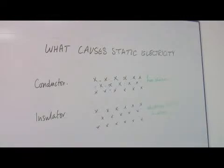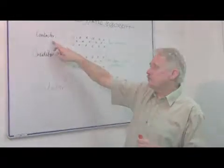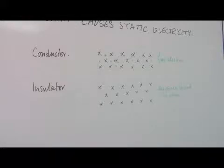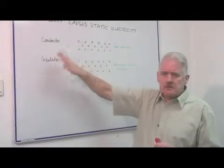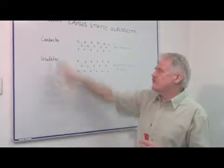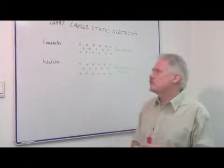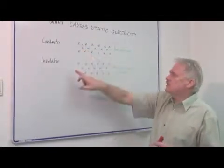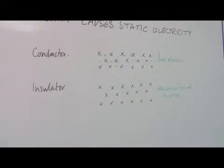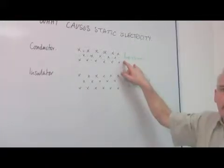First of all, there are two main types of materials: conductors and insulators. There are things in between, and some are better conductors and some are worse conductors. But the thing that distinguishes the two is that a conductor contains free electrons.